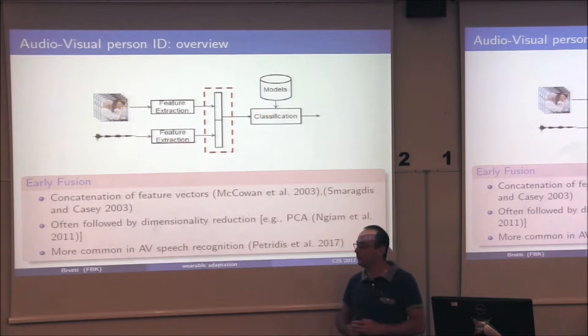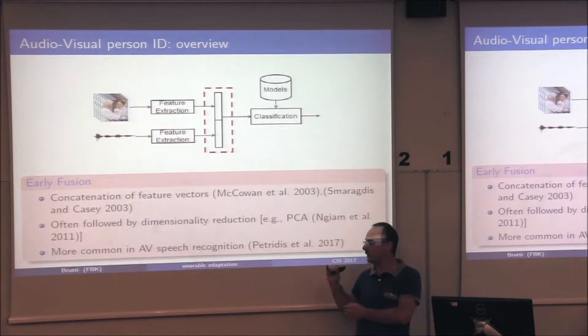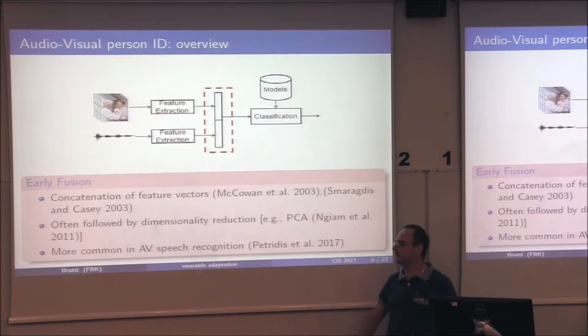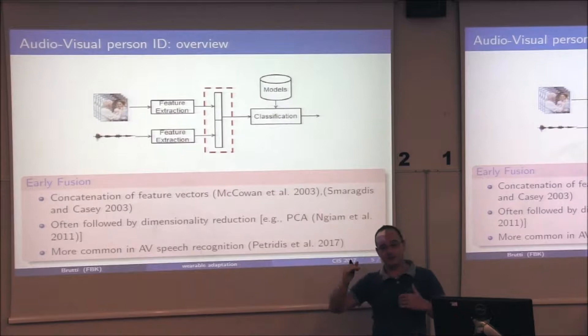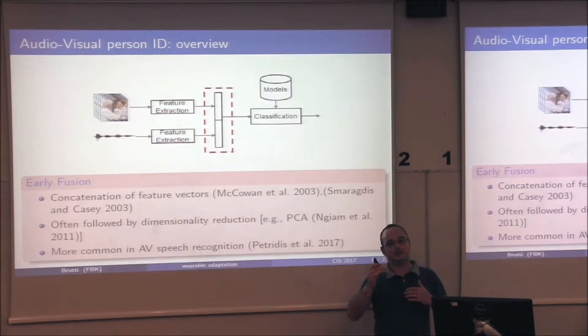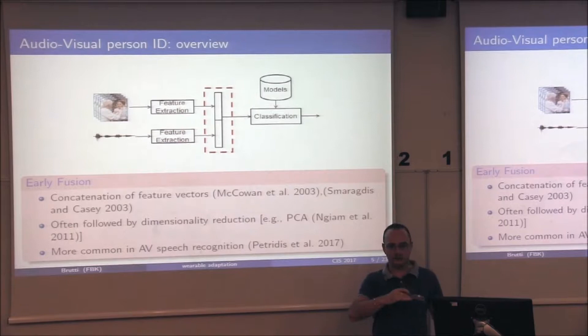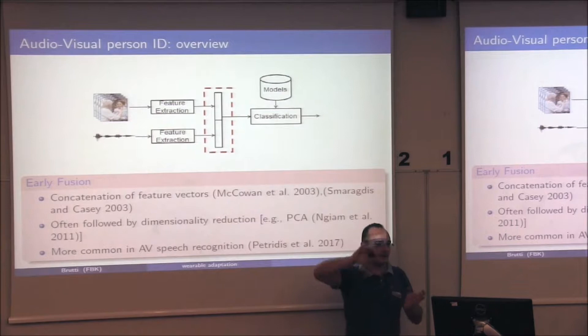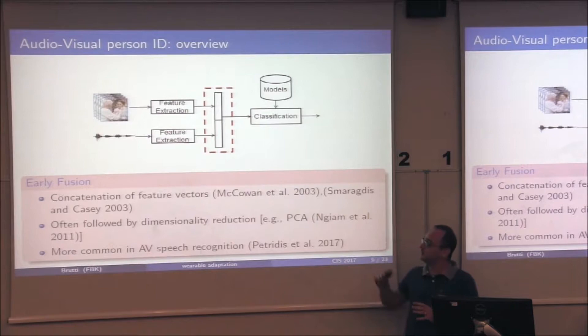Early fusion sounds attractive — you have a single feature vector with complementary information from both modalities. However, in many cases it's not straightforward. The feature vectors are of completely different nature and frame rates, so some processing is required. The combined feature vector is larger, which creates problems in training the models. Also, in this task the information is not persistent — the speaker could be silent or the target out of the field of view — so the feature vector could be partly empty.